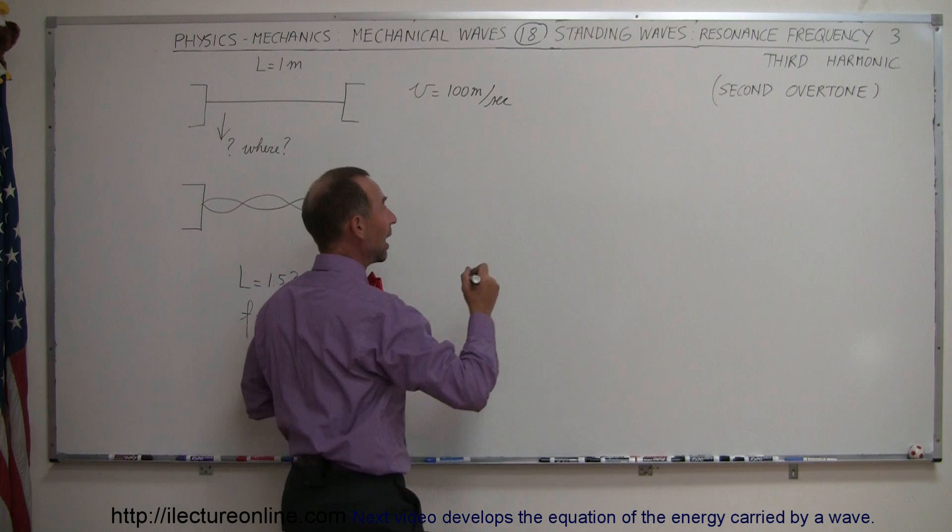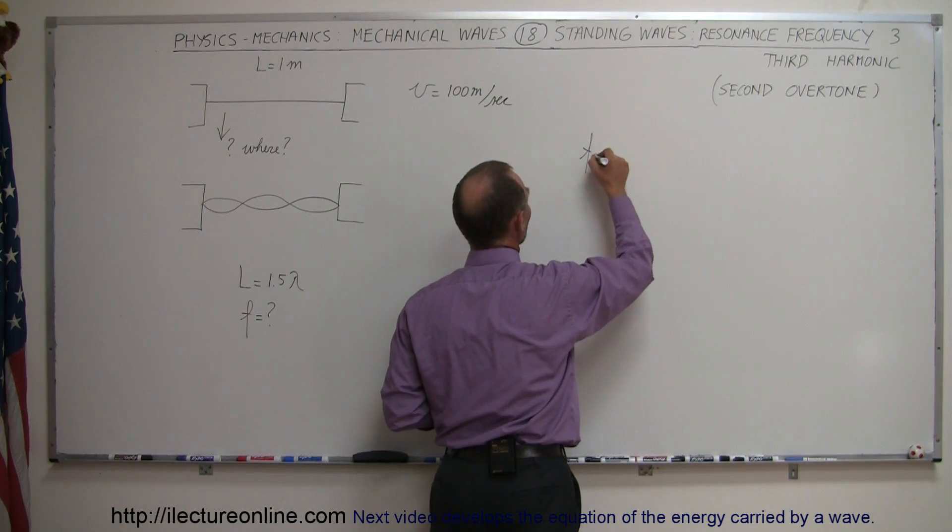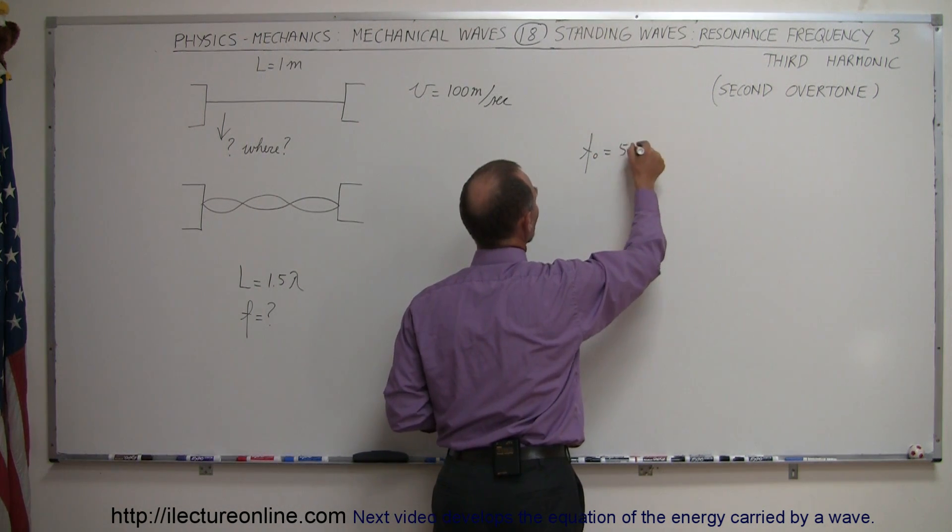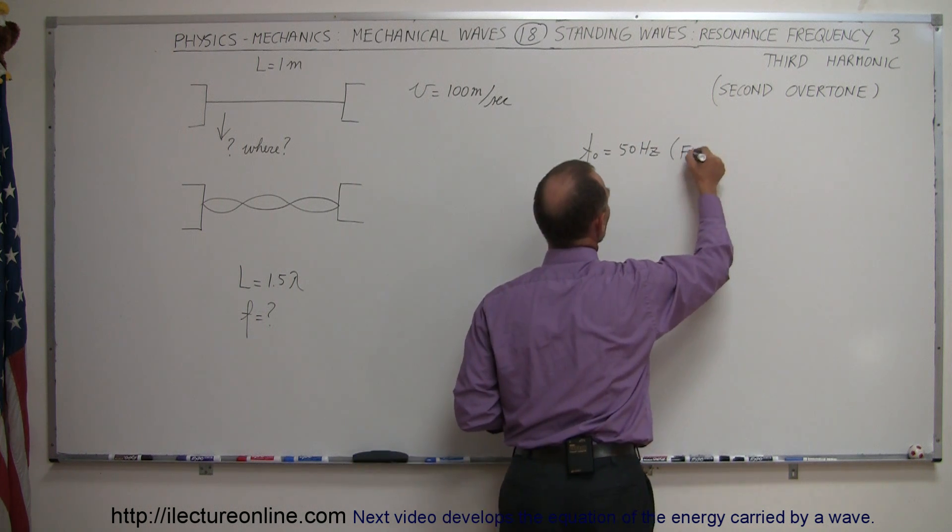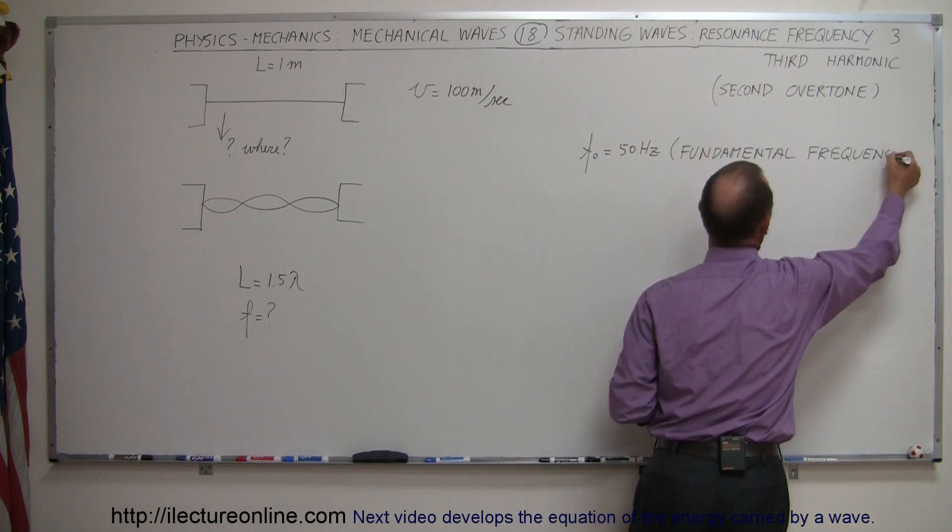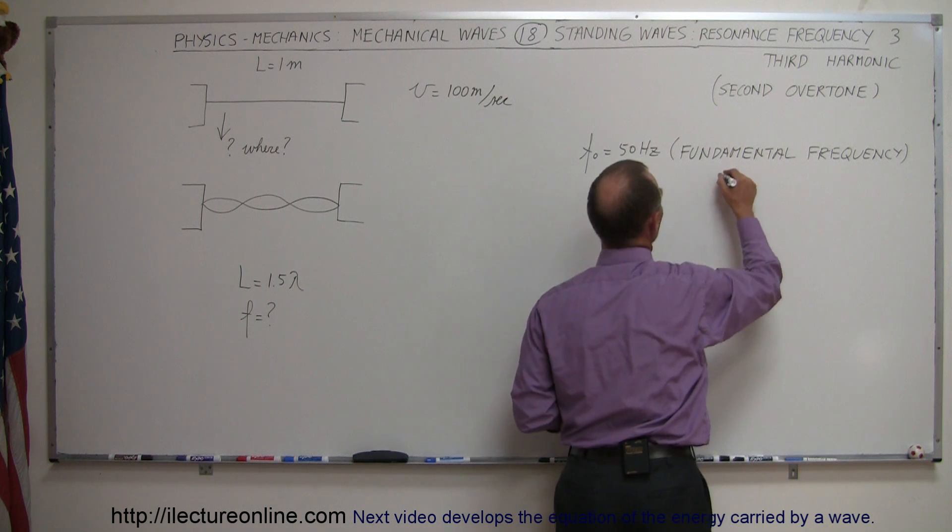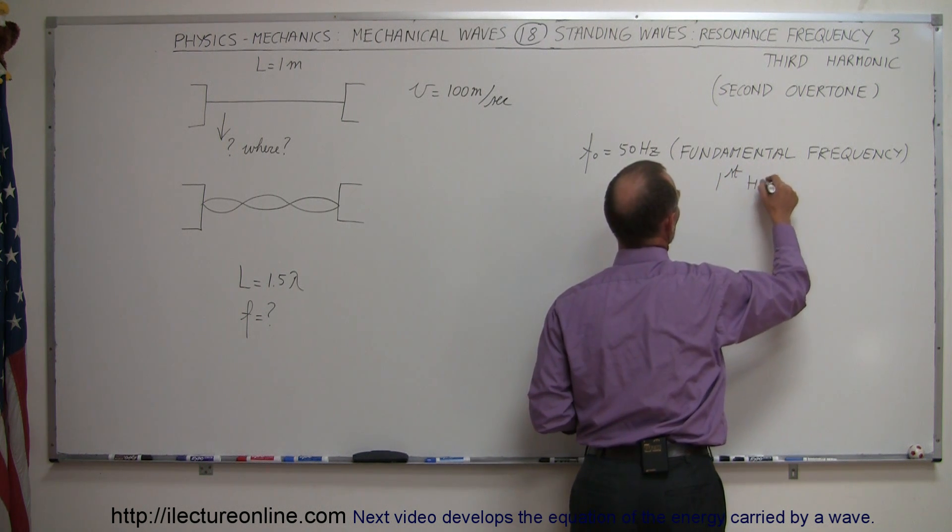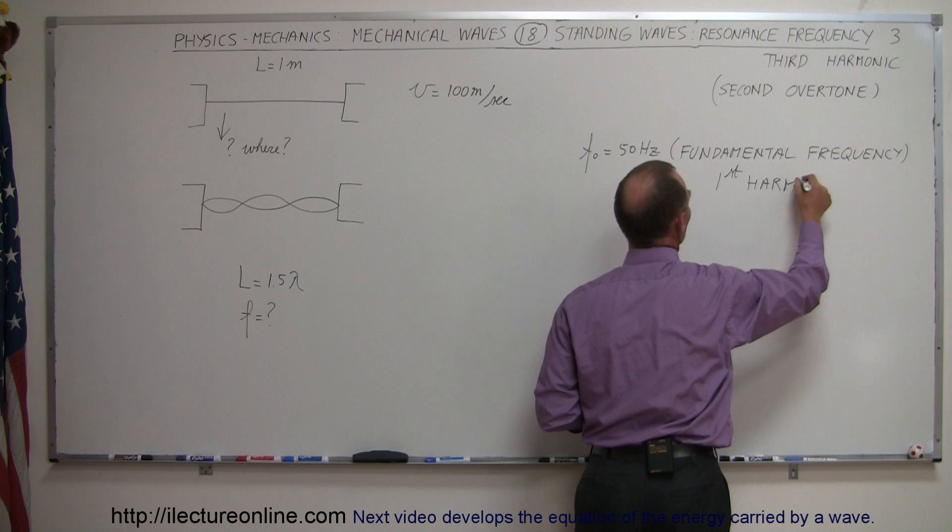Remember that F sub-naught, that we found in a few videos ago, was equal to 50 Hz, which was known as the fundamental frequency or the first harmonic. That's also known as the first harmonic. We know that that was 50 Hz with the very same string.